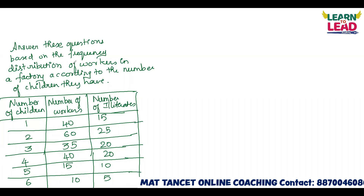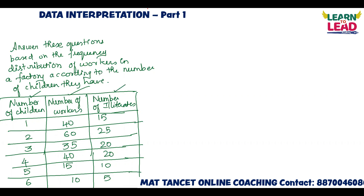Answer these questions based on the frequency distribution of the workers in a factory, according to the number of children they have. They have given the number of children, number of workers, and number of illiterates.